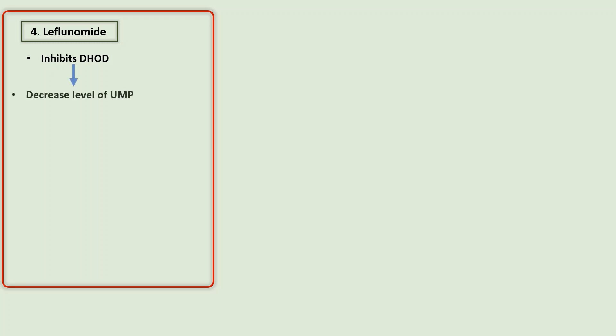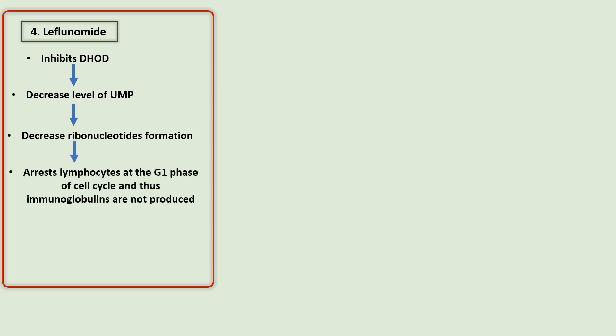The next non-biological DMARD is leflunomide. It inhibits dihydroorotate dehydrogenase, thus decreasing the level of UMP and decreasing ribonucleotide formation. It arrests lymphocytes at the G1 phase of the cell cycle so that immunoglobulins are not produced. Side effects include alopecia, rash, diarrhea, and hepatotoxicity.